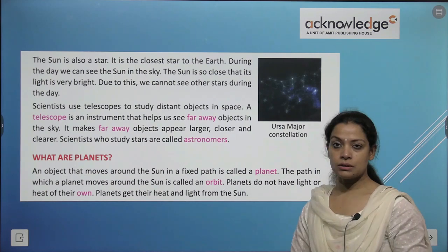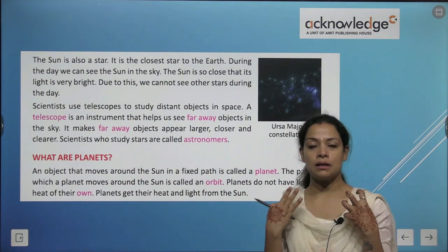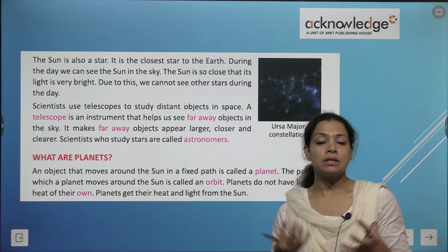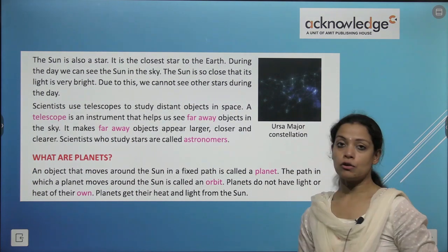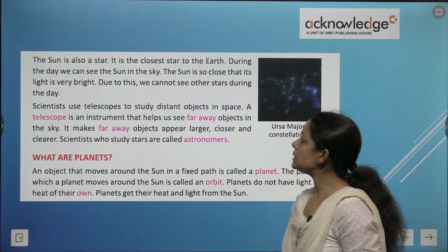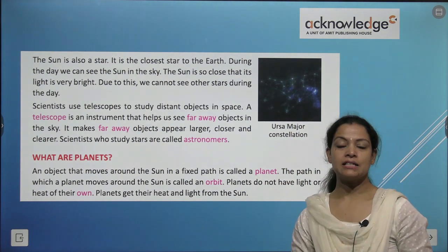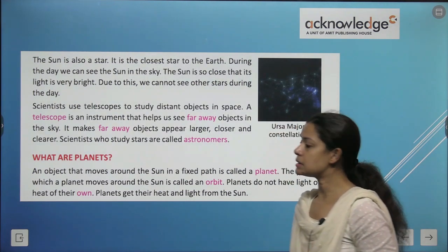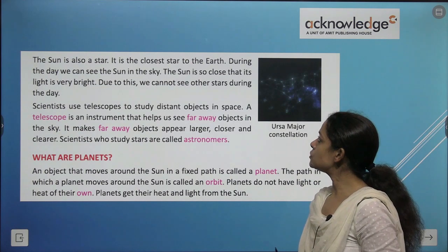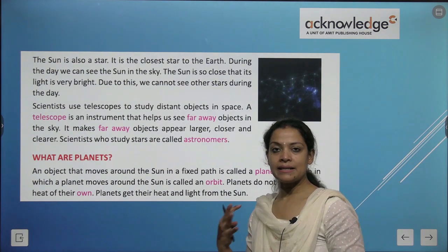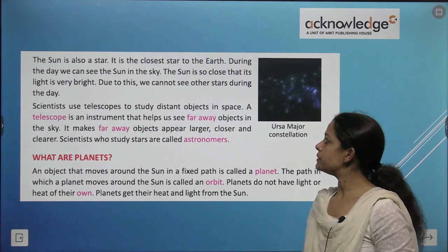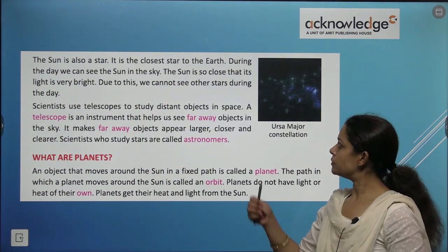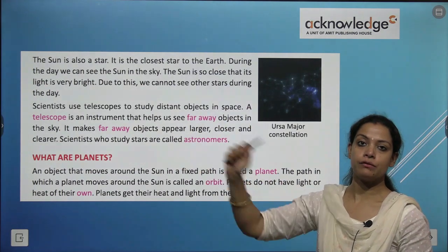The sun is also a star. Stars give out light and heat, and the sun is the ultimate source of light and heat. The sun is the closest star to the Earth, that is why it appears quite big in size. During the day we can see the sun, and its light is so bright that we cannot see other stars during the day.